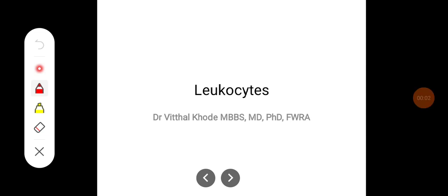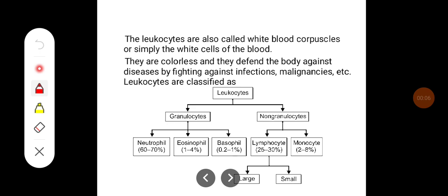Hello everyone, in this class we will study about the leukocytes. The leukocytes are also called white blood corpuscles or simply the white blood cells of the blood. They are colorless and they defend the body against diseases by fighting against infections, malignancies, etc.